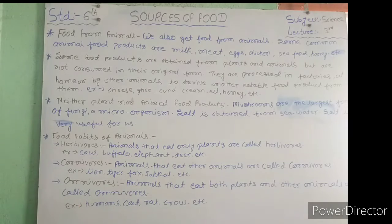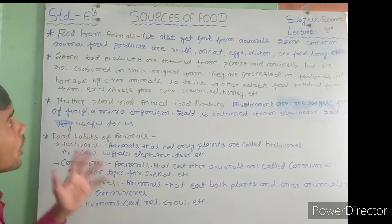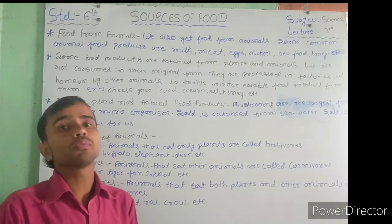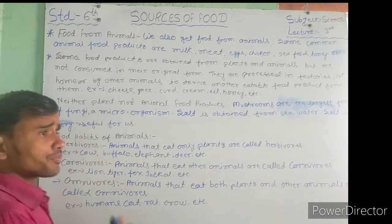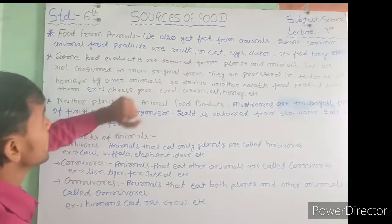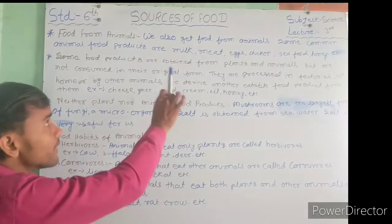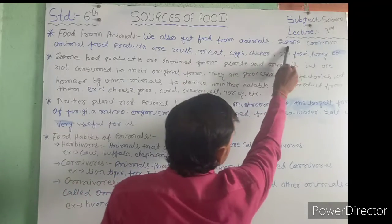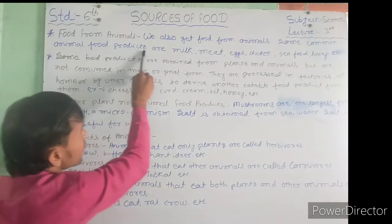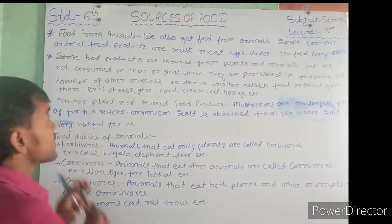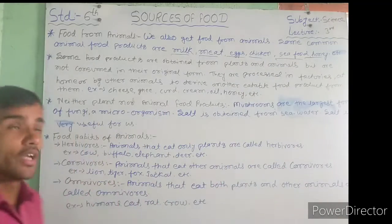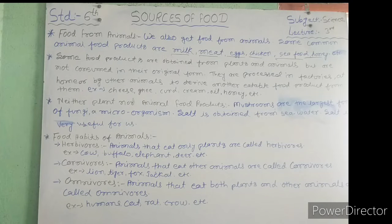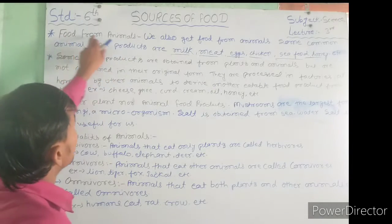We get many different types of food from animals. Some common animal food products are: milk, meat, eggs, chicken, seafood, and honey. These are the types of food products we get from animals.